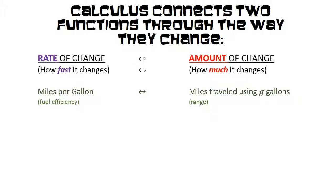A few examples. Fuel efficiency is measured as a rate of change, miles per gallon. Anytime you see the word per, you want to think about rate of change.